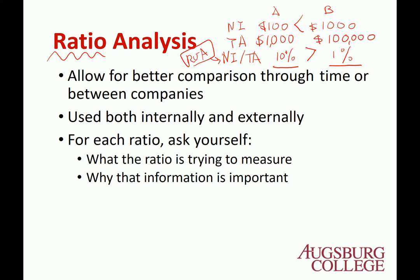Ratios can be used both internally and externally. Internally, we can compare departments — say, the iPhone versus iPad department in Apple — or compare performance across years, like current year versus a five-year average. Externally, you can compare with competitors, set an industry benchmark, and if your performance is better, you're an alpha firm; if worse, you're underperforming.